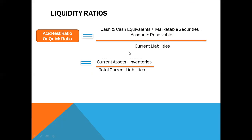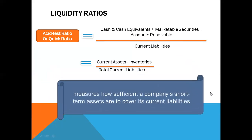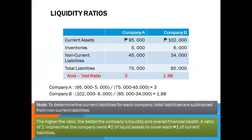The logic for deducting inventories is that inventory can often be slow-moving and cannot readily be converted into cash. Additionally, if required to be converted quickly into cash, it would most likely be sold at a steep discount to the carrying cost on the balance sheet. The acid test ratio measures how sufficient a company's short-term assets are to cover its current liabilities.